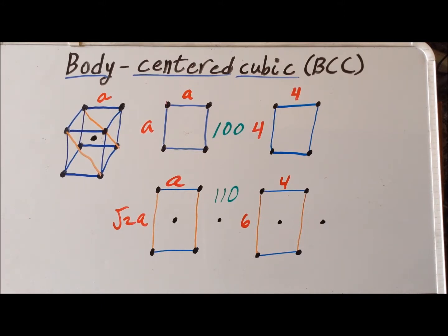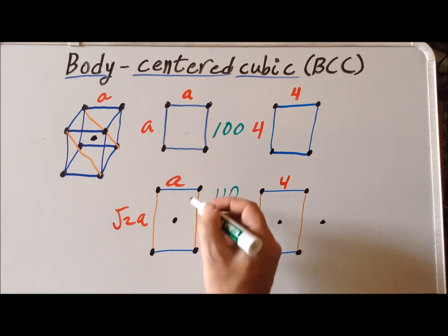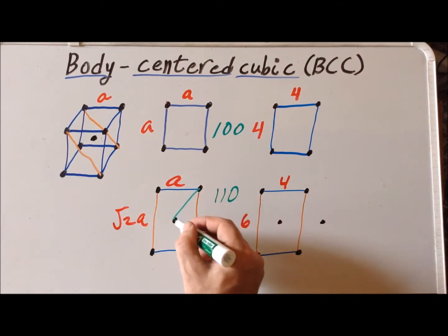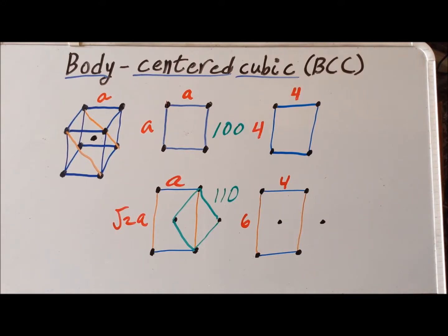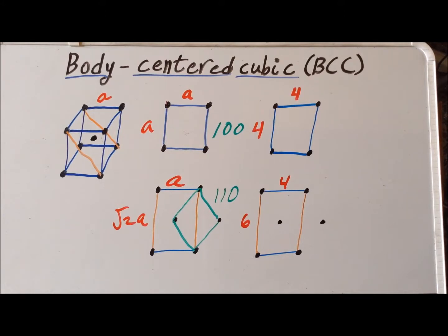But we can also redefine our unit cell in such a way that the cell is primitive. The way we do that is by connecting these particular atoms. Now we have a shape that is rhombohedral — a rhombus. Another feature of this particular rhombus is that it has no atoms other than at the vertices, so this is a primitive unit cell. For the body-centered cubic 110 plane, we can think of it as a centered rectangular cell or as a primitive rhombohedral cell.